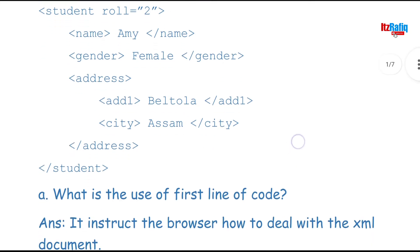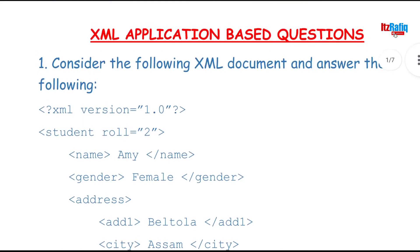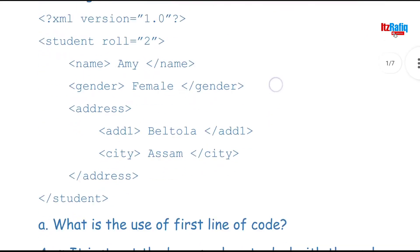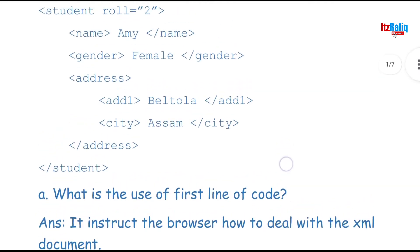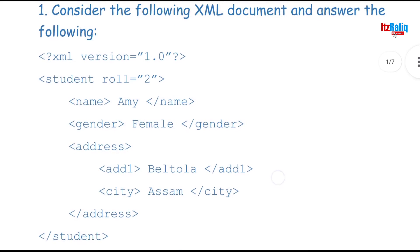The first question is: what is the use of the first line of code — that is, XML version 1.0? It indicates how to deal with the XML document. It instructs the browser, or tells the browser, how to handle this document.